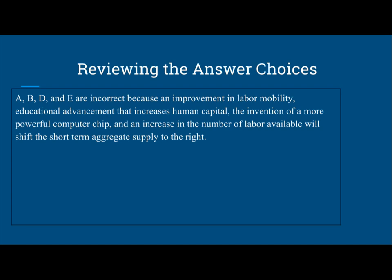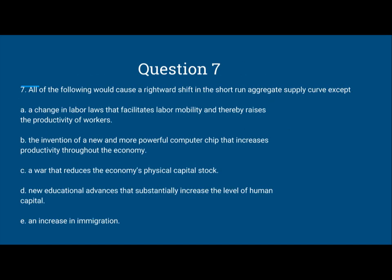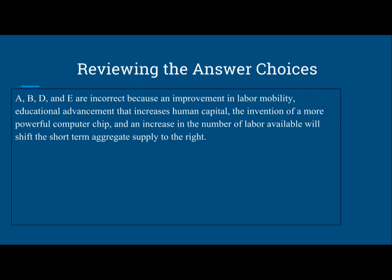Now, A, B, D, and E are incorrect because an improvement in labor mobility, educational advancement that increases human capital, the invention of a more powerful computer chip, and an increase in the number of labor available — which is an increase in immigration — will shift the short-run aggregate supply to the right.